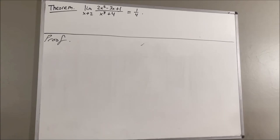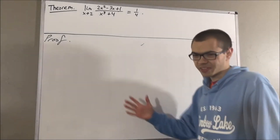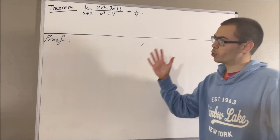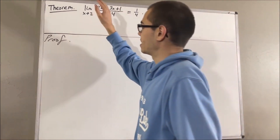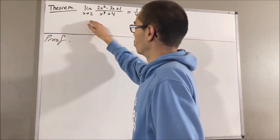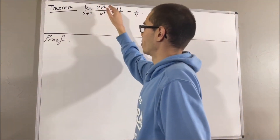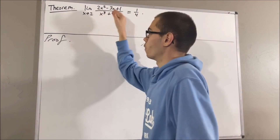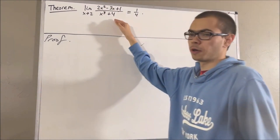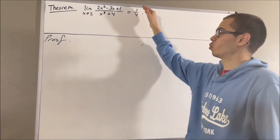Hello! In this video, we are going to prove the following theorem. The limit as x approaches 2 of 2x squared minus 3x plus 1 over x cubed plus 4 is equal to 1 fourth.